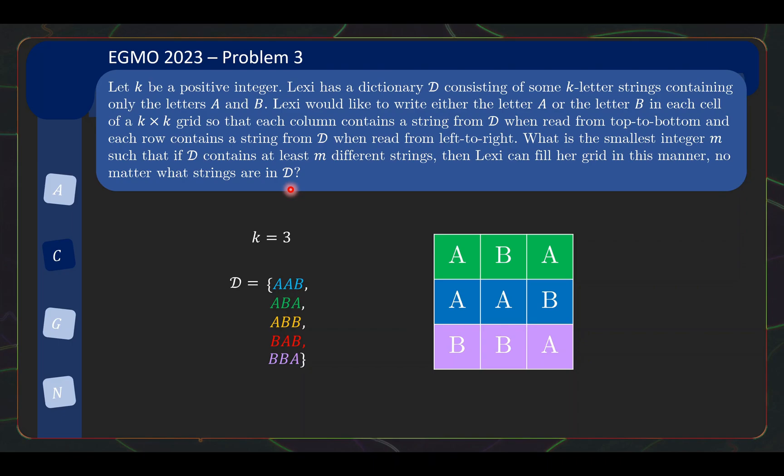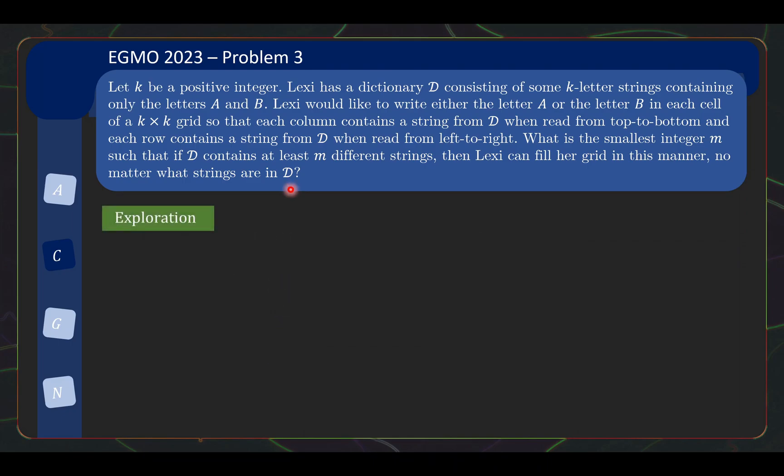As usual, I would like to talk about how I approach this problem from the beginning through a motivational exploration section. Usually when we're faced with this kind of problem, the first thing to try is small cases to get a better understanding. When k equals 1, the answer is evidently 1 because you only have one square, and the minimum M required is just 1, so that's not very interesting.